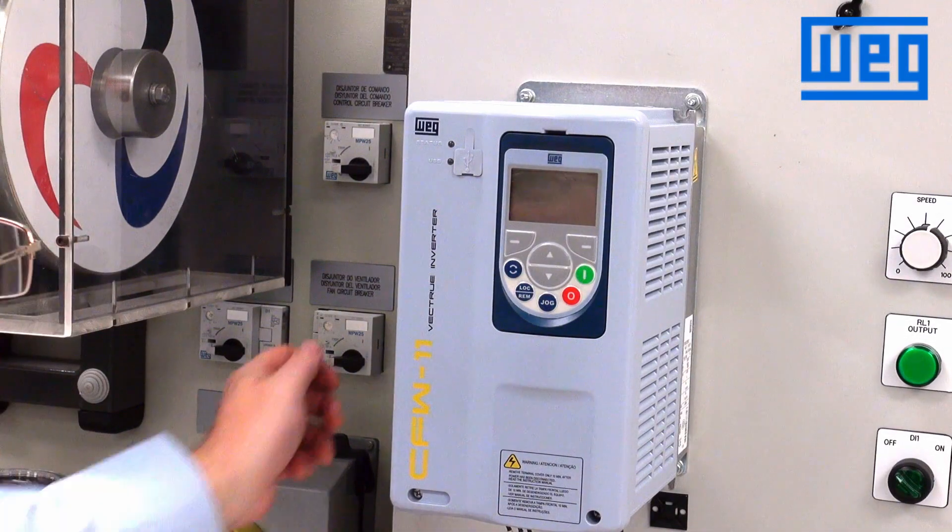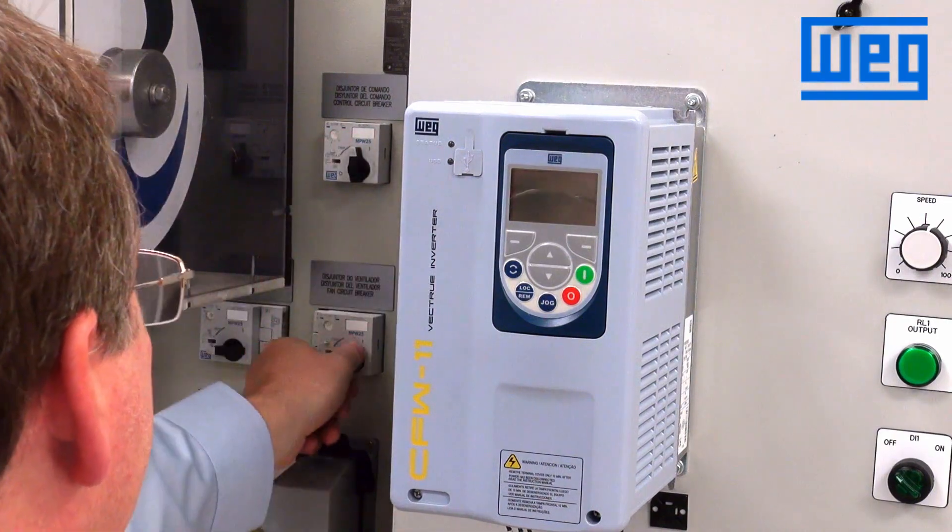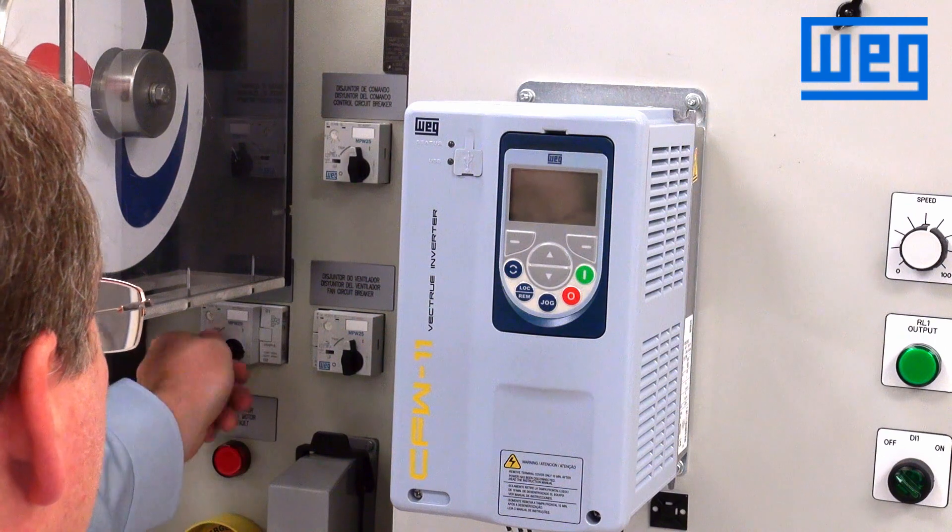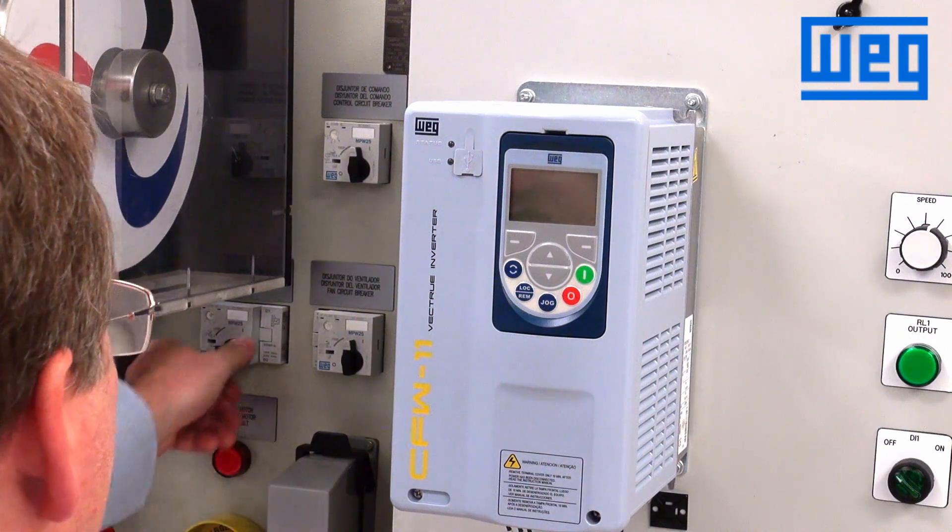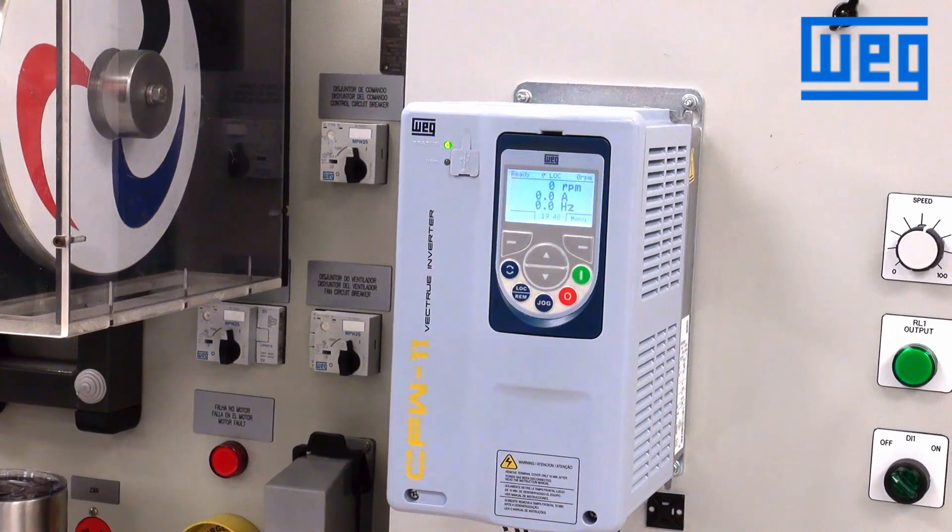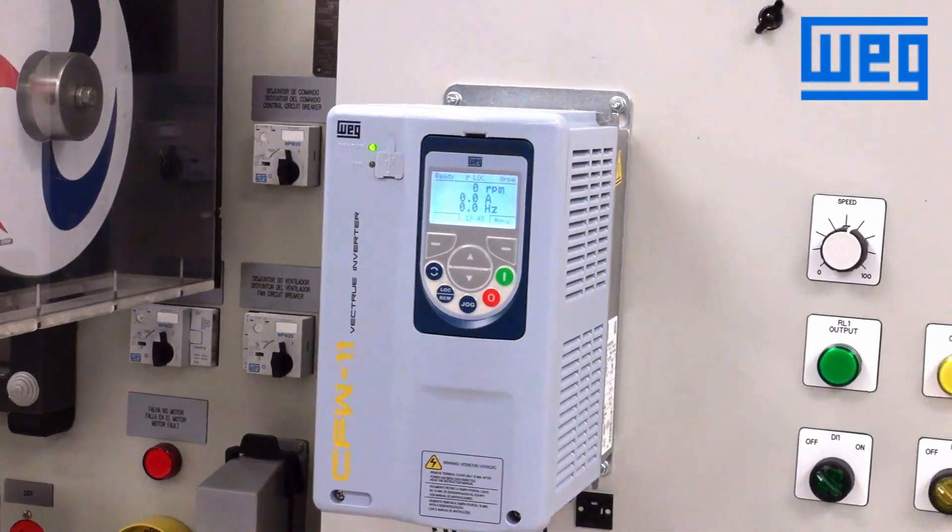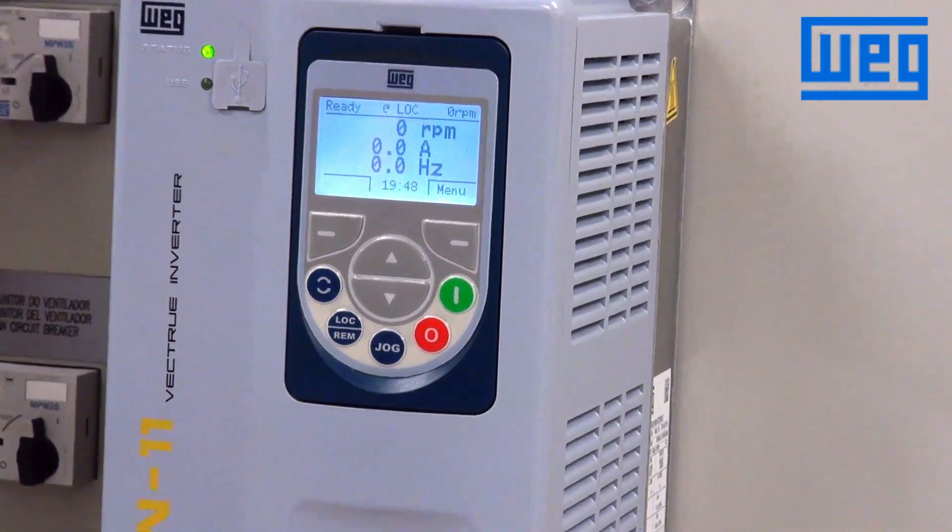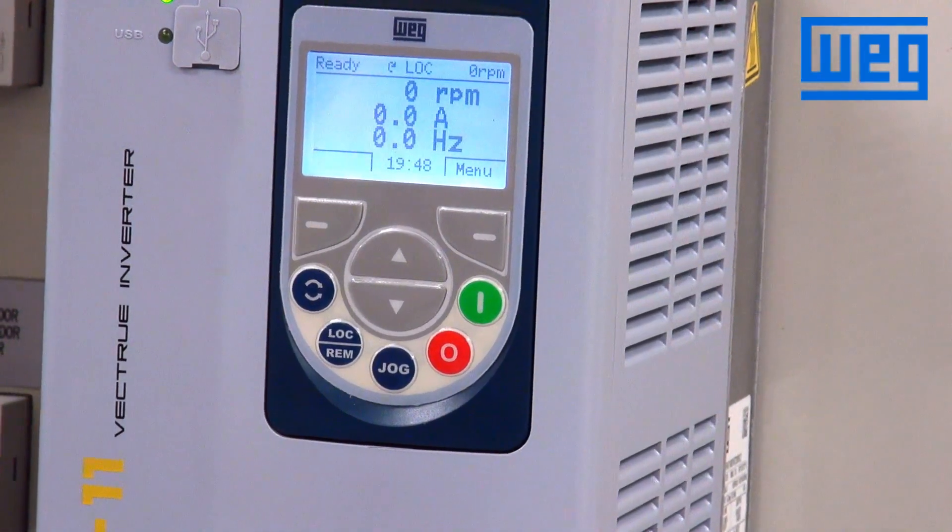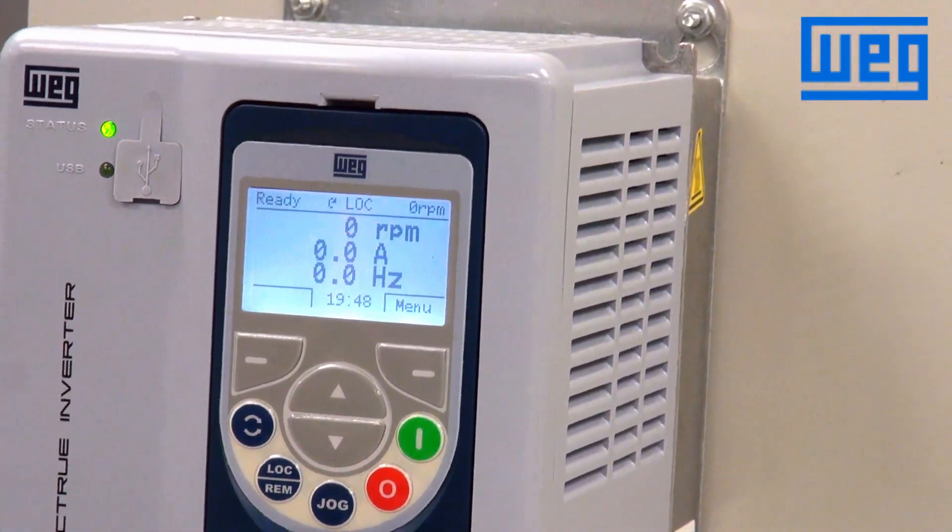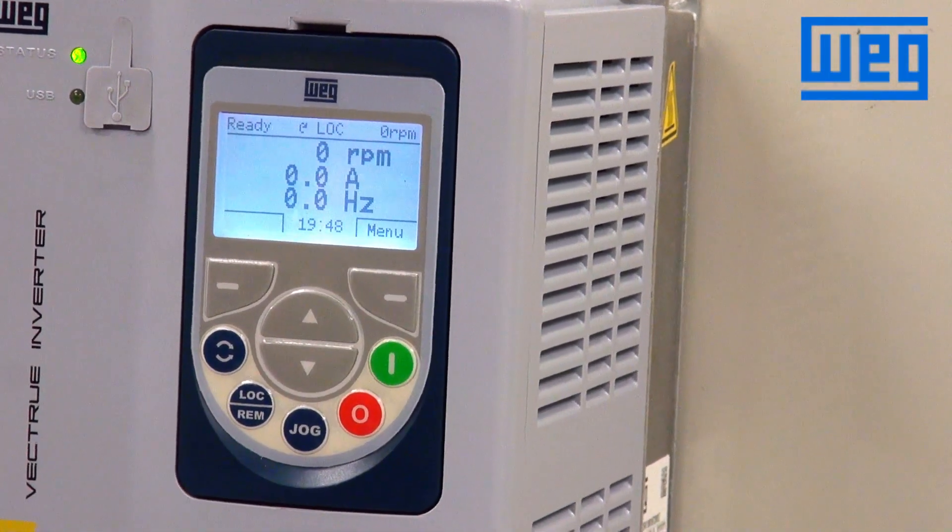So now we will reapply power to the VFD. As we see with the HMI, it will have a backlight. Looking at the display of the HMI, we see in the top left-hand corner is a status display. This is displaying ready.